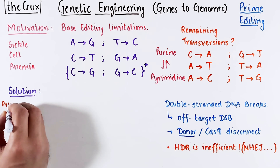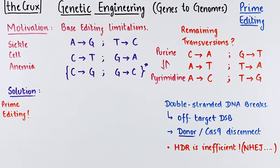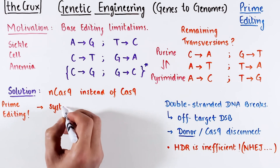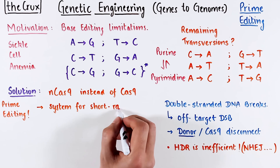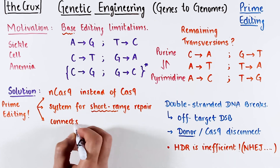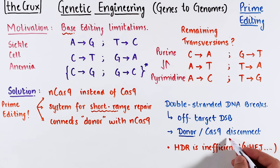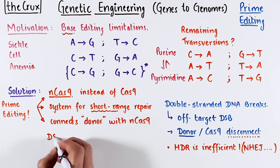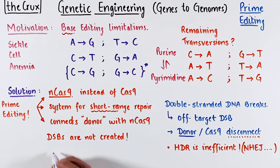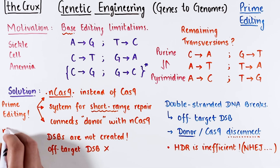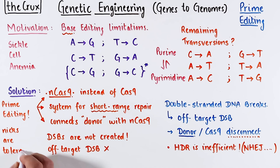A better solution is prime editing. It uses nCas9 instead of Cas9, and the vanilla version is meant for short-range genome editing — only a few bases. A neat feature of prime editing is that it connects the donor with the Cas9, unlike the standard approach. Since prime editing relies on nCas9, double-stranded breaks are not created. Therefore, even if there is off-targeting of nCas9, the only thing it can do is nick the DNA, which is easily restored and repaired.